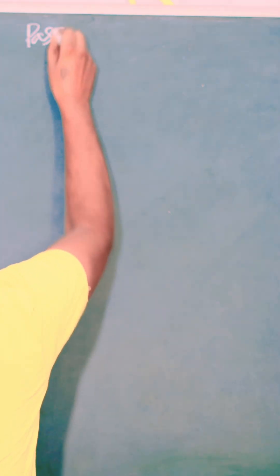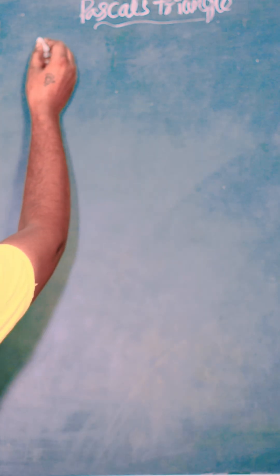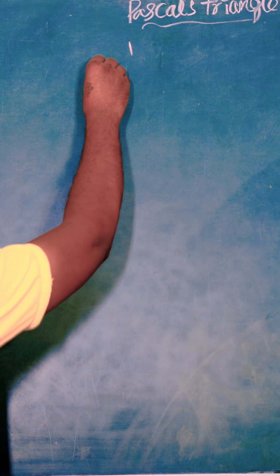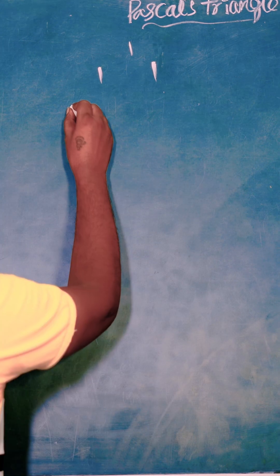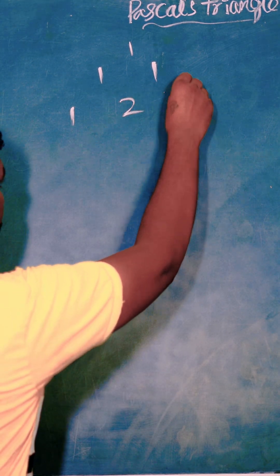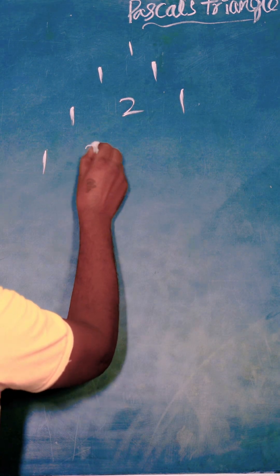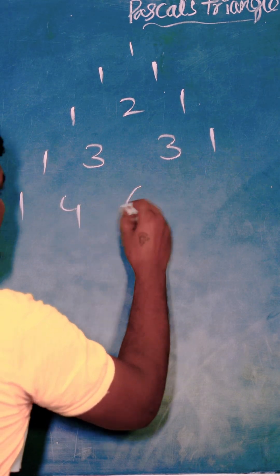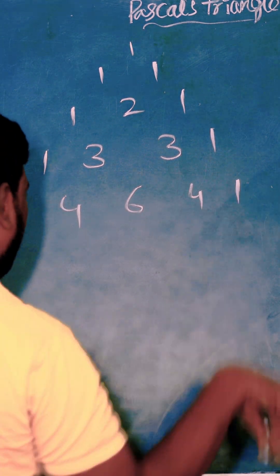Pascal's Triangle. First row is 1. Add new rows. Every row starts and ends with 1. So here also 1, and beginning is 1. Here 1 plus 1 is 2. End with 1. Here 1. 1 plus 2 is 3, 2 plus 1 is 3. Here 1. Then 1 plus 3 is 4, 3 plus 3 is 6, 3 plus 1 is 4, then 1.